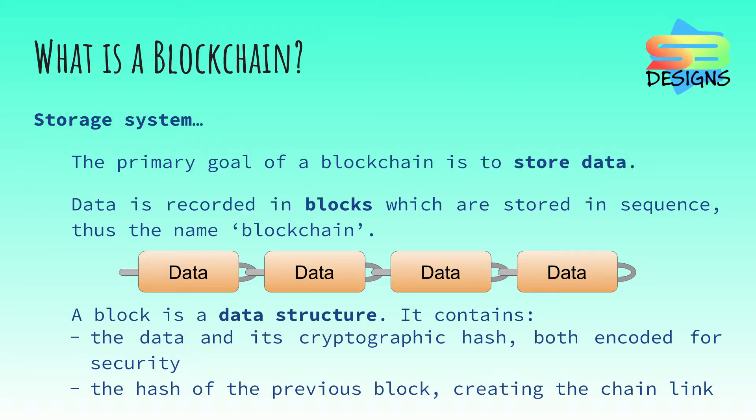A block is a data structure. It contains the data and its cryptographic hash, both encoded for security, and the hash of the previous block, creating the chain link.